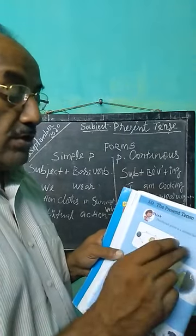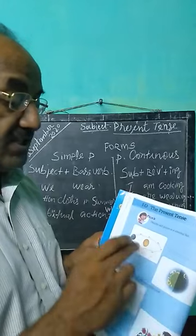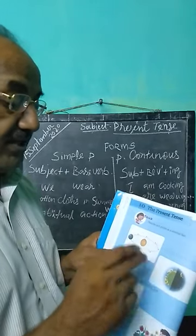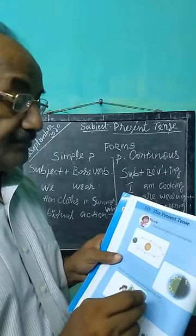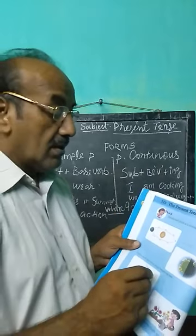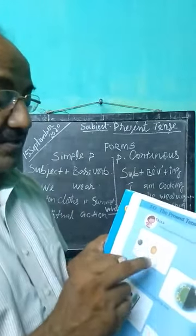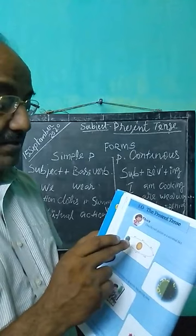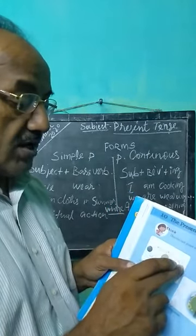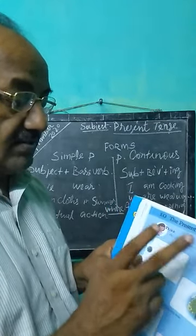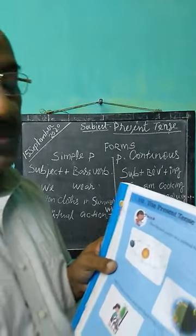Now you have to fill up these columns seeing the picture. Fill up the blanks. This is the sun and earth. Earth goes around the sun — a universal fact, everybody knows.